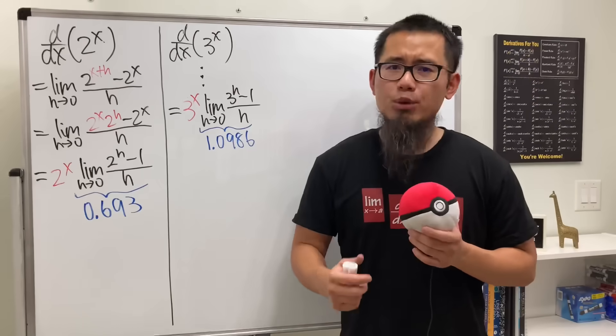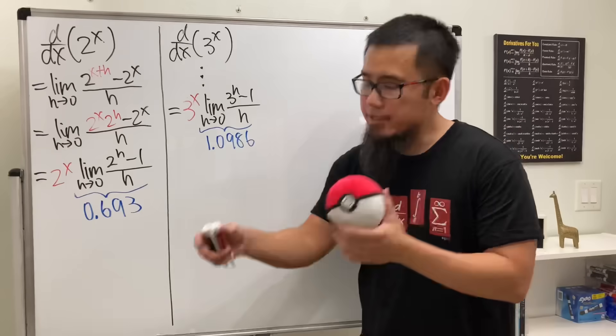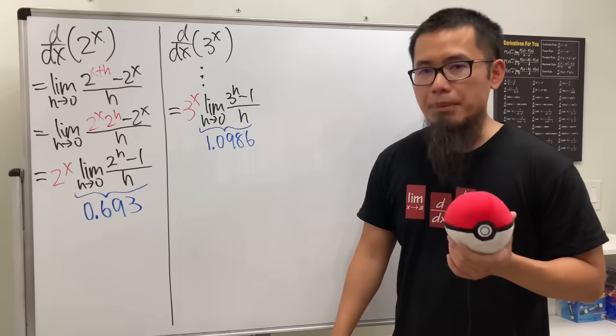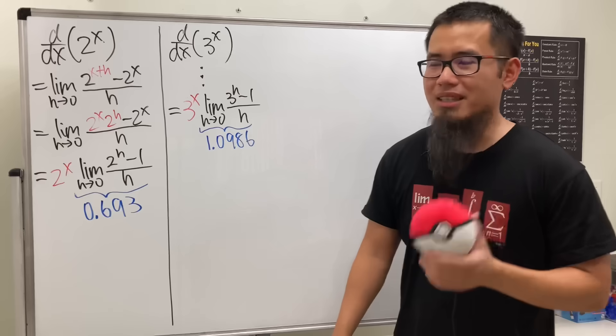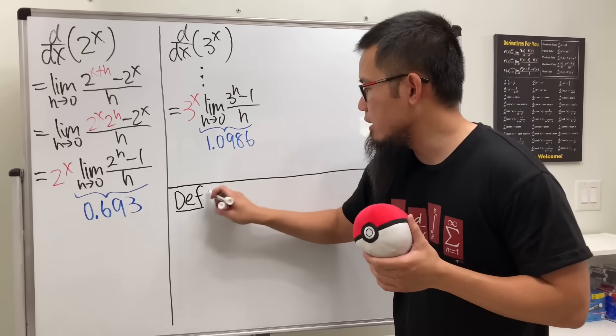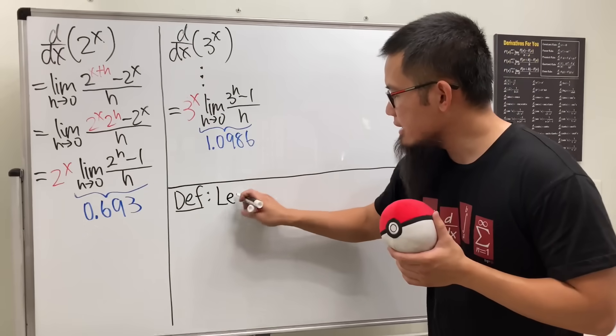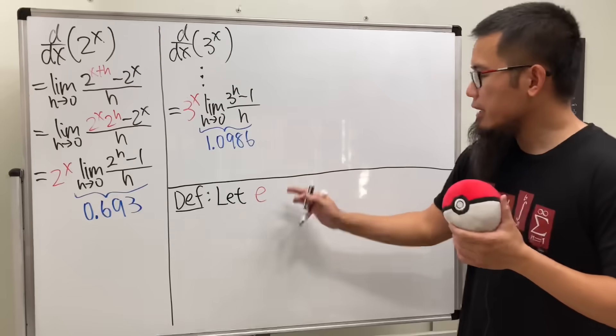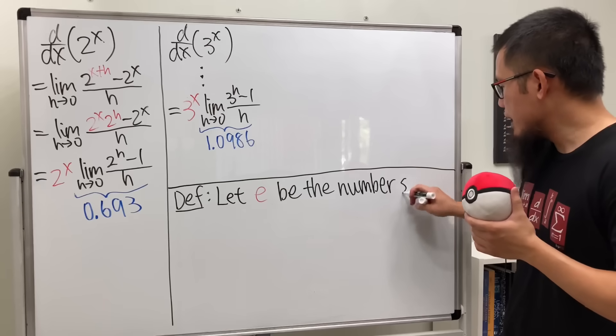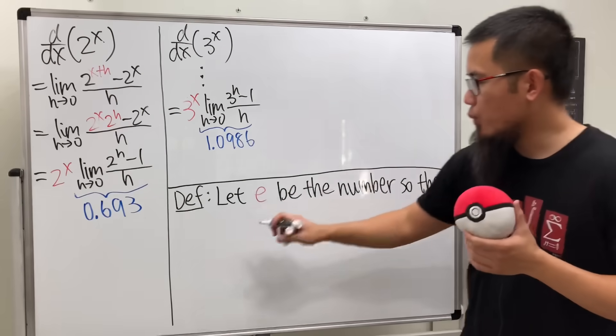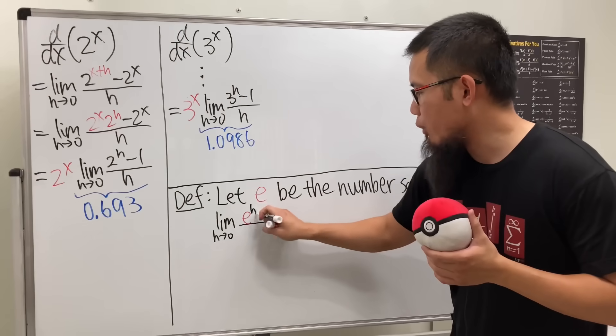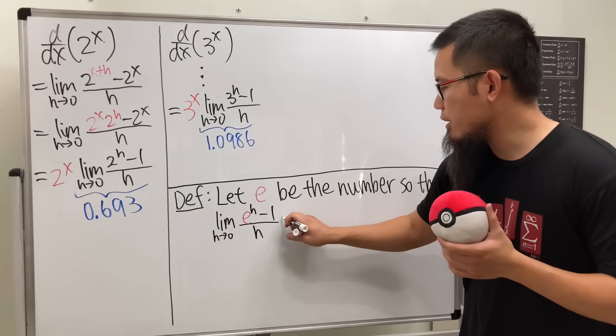So now the question is, is it possible to have a base so that when we differentiate that base to the x power, we just get itself back? Meaning that we want this limit to be exactly equal to 1. Is that possible? Yes, and that's exactly what e is. So have a look right here. This is just one of the definitions of e. You can define e in this way. First, let's just look at e as a symbol. Let e be the number so that the limit as h going to 0 of e to the h minus 1 over h equals exactly 1.